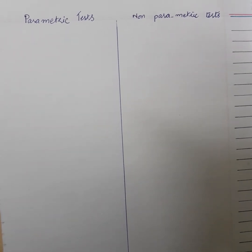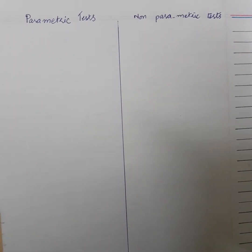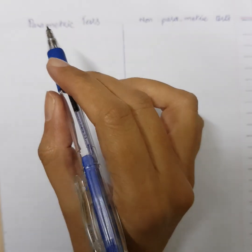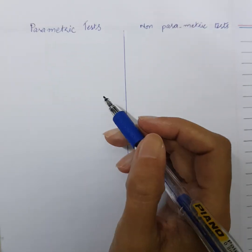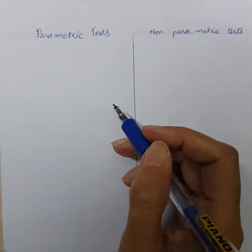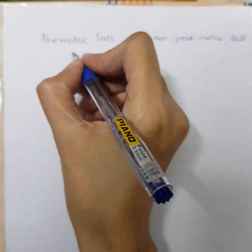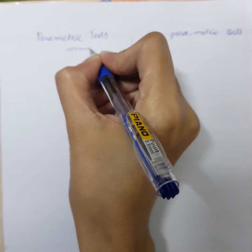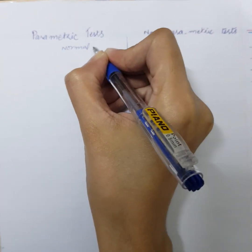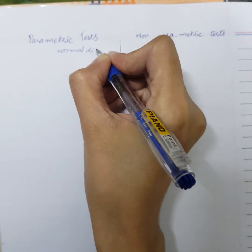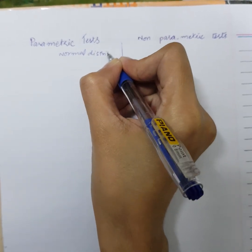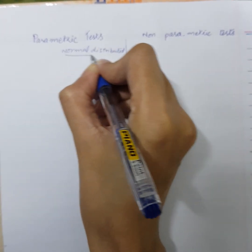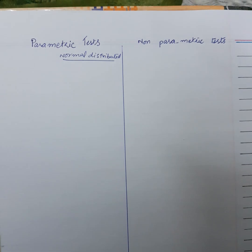Where to use parametric tests and where to use non-parametric tests? Parametric tests are always used for data which is normally distributed. A normally distributed data is the main requirement for the use of parametric tests.